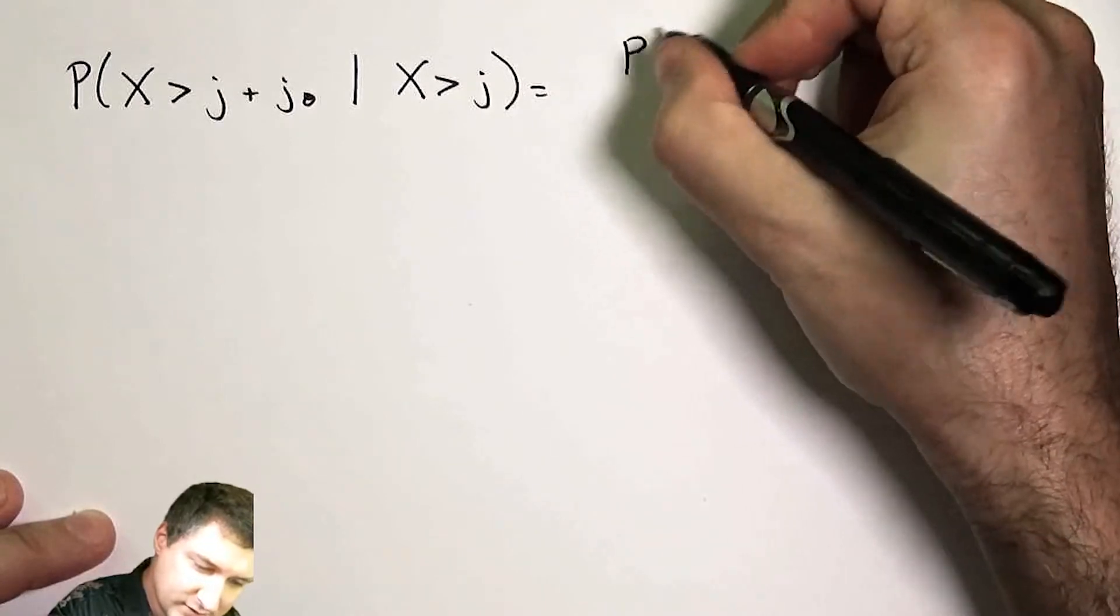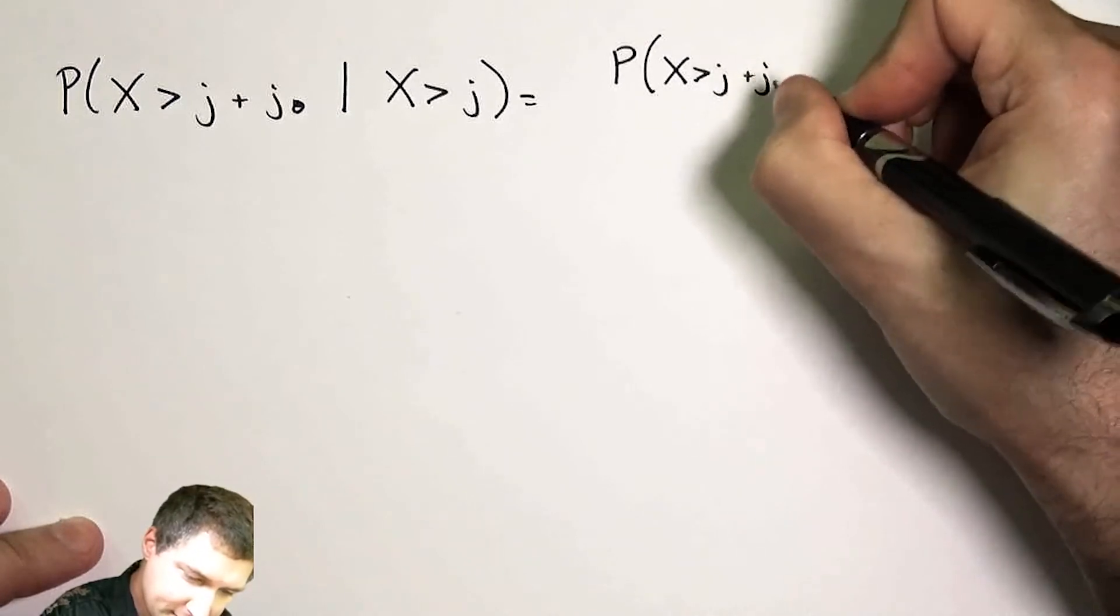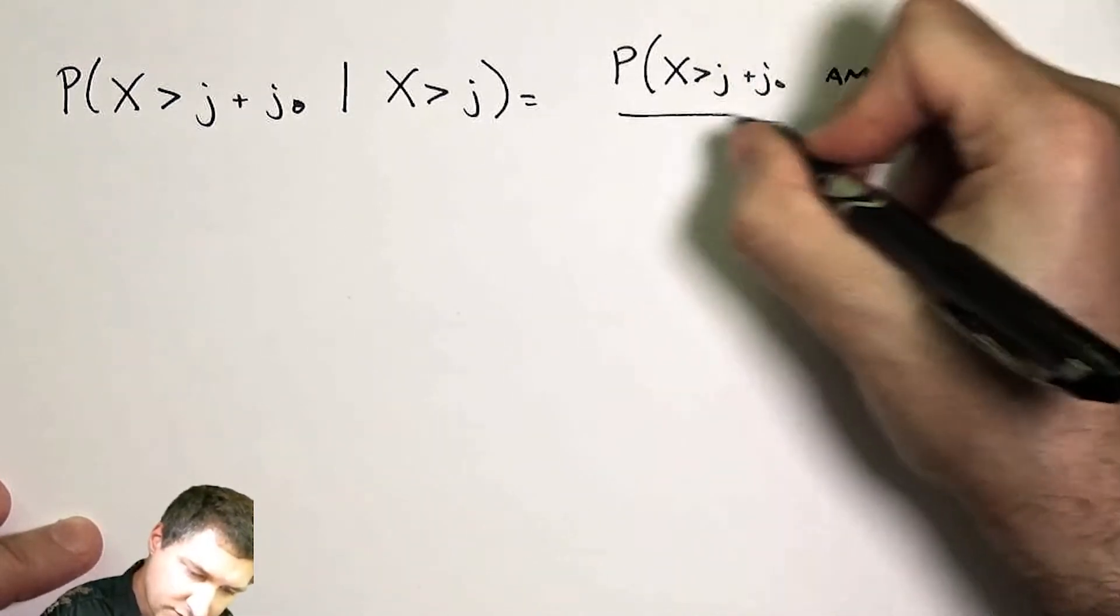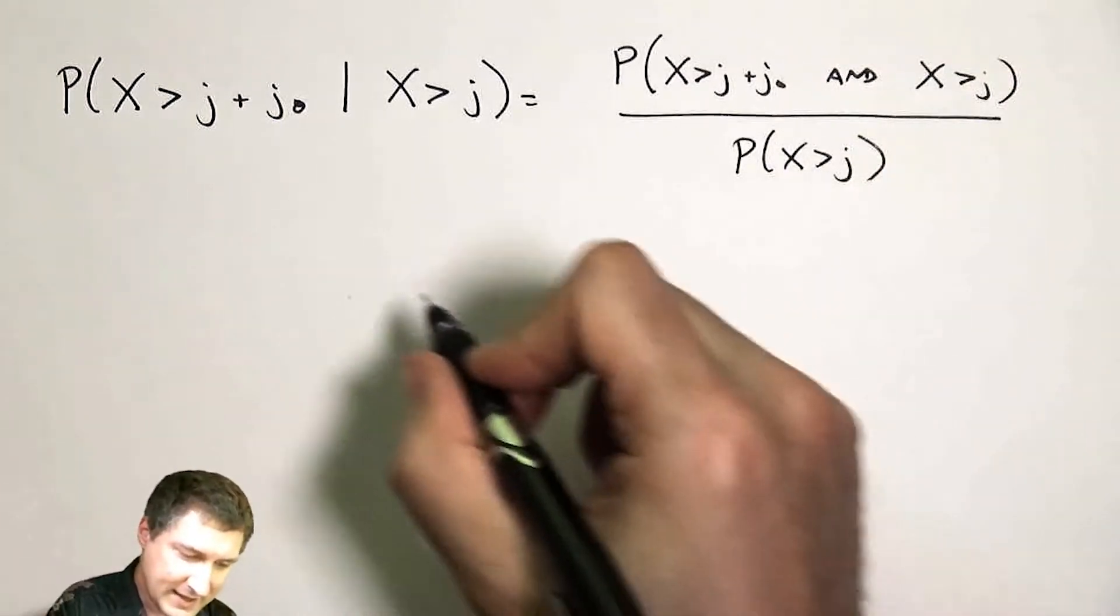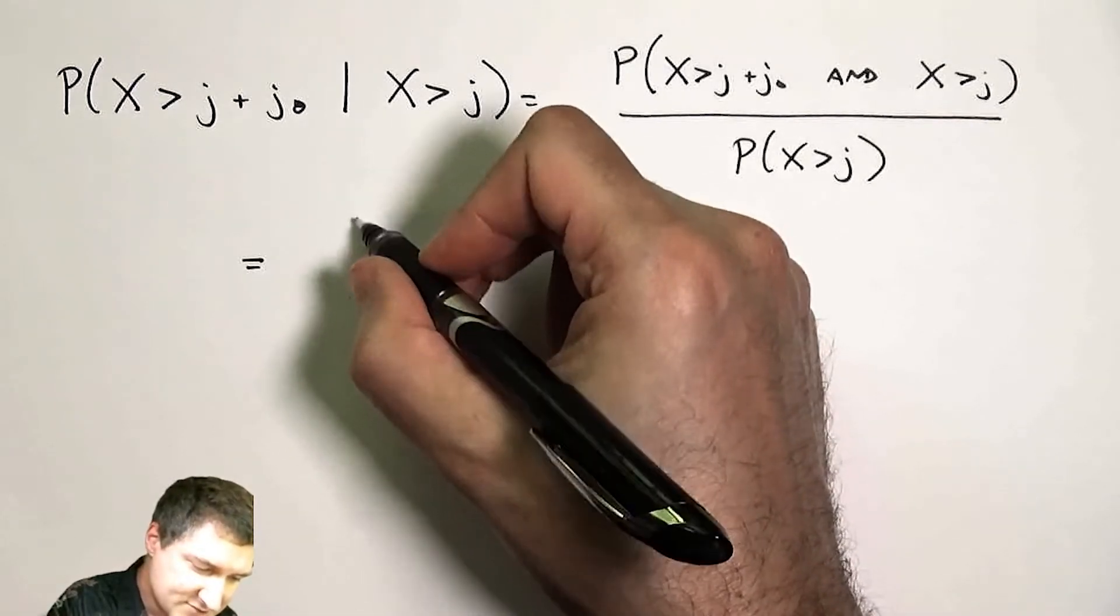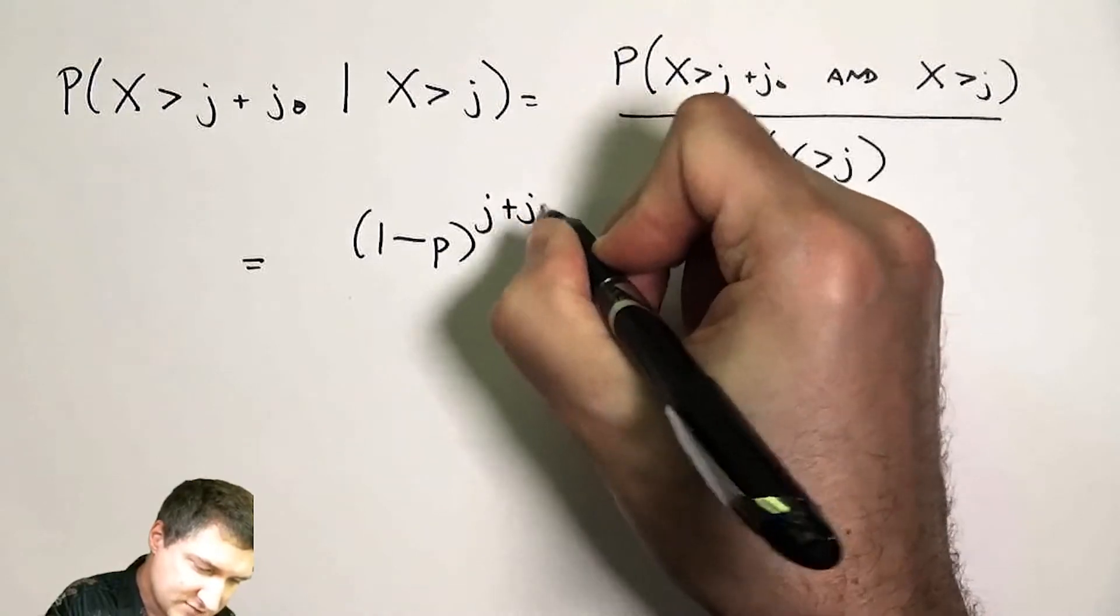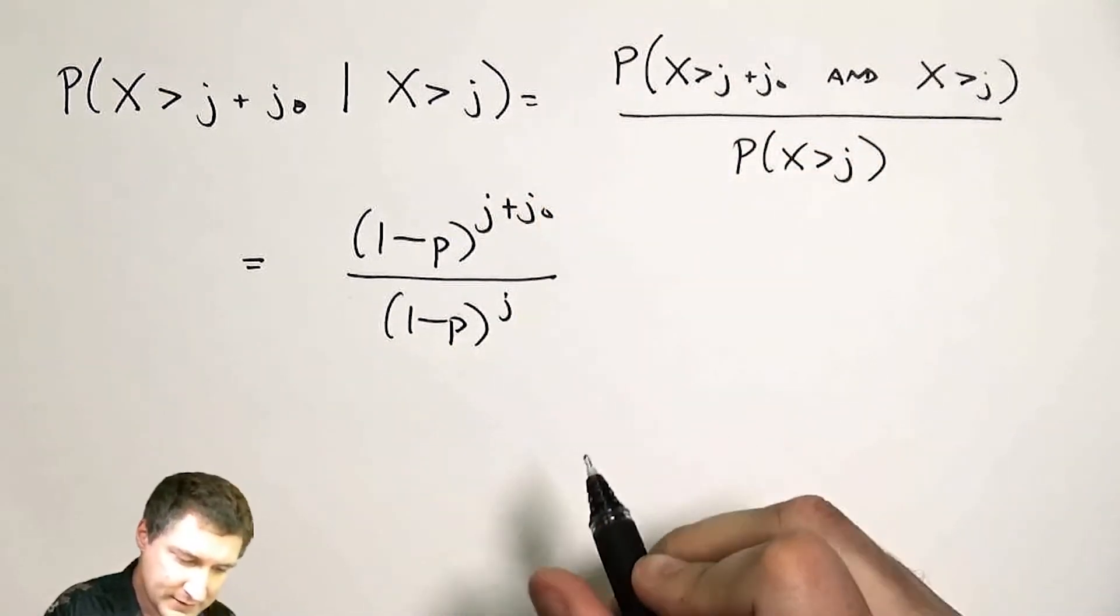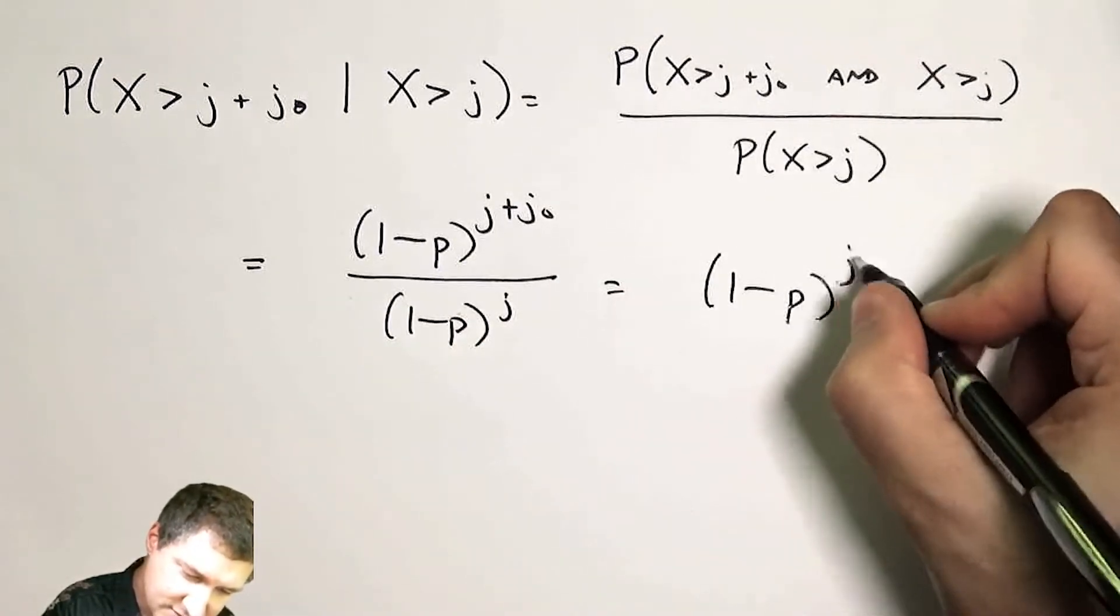Well, conditional probability says this is the probability of both of these things happening over the probability of the event. And now I know what the values of both these things are. So the top part is just (1-p)^(j+j0). The bottom part is (1-p)^j. And now I can do some cancellation. I can say this is (1-p)^j0.